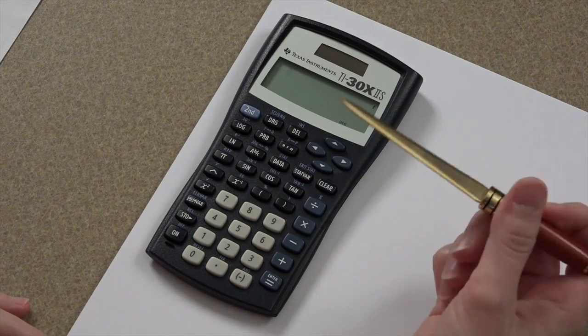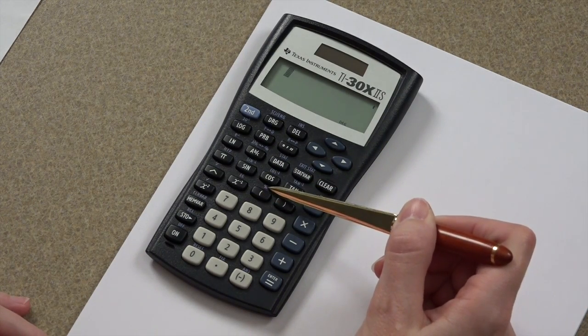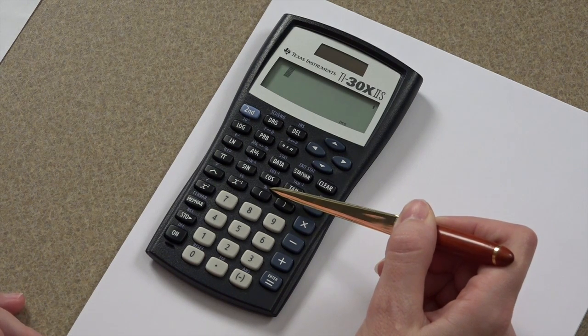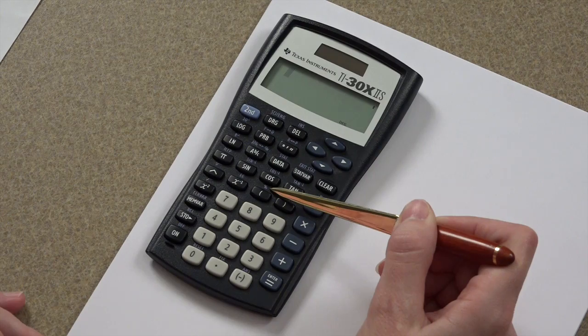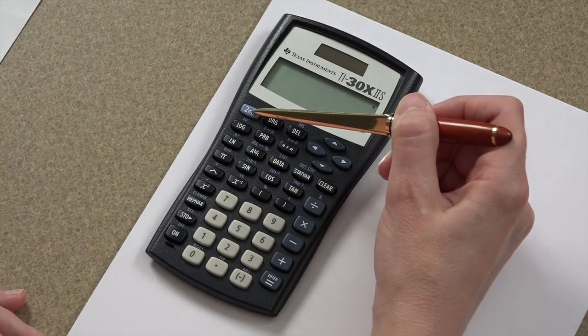Your percent key is located right above a parenthesis key. It's right here. So anytime you need to use your percent key and function key, you'll need to press the second button first.